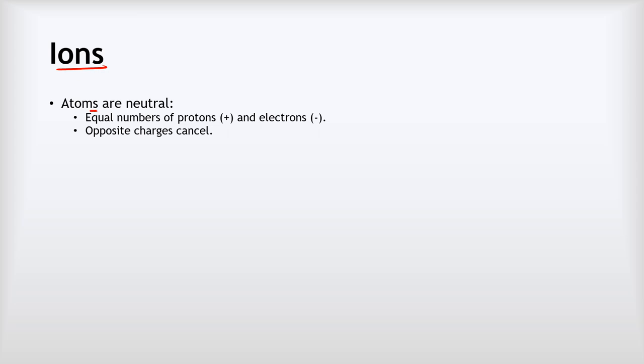Let's start by thinking about what ions are. Before we can do that, we need to remind ourselves what atoms are. They are the smallest stable particle of matter, and importantly, they are neutral — that means they've got no overall charge. The reason why is because they've got equal numbers of positive protons and negative electrons, so all the positive charges and the negative charges cancel out to give no overall charge.